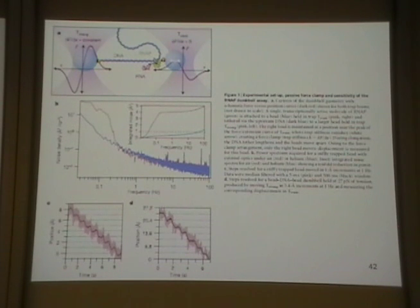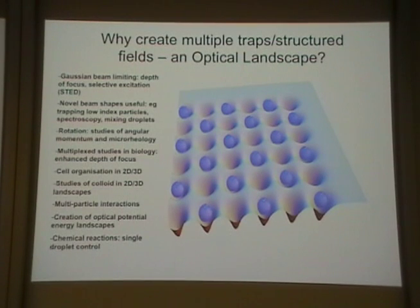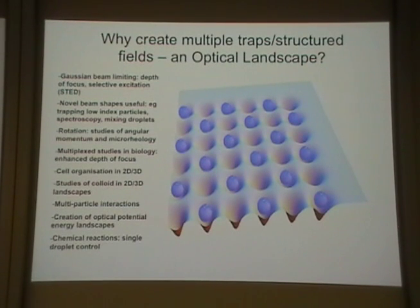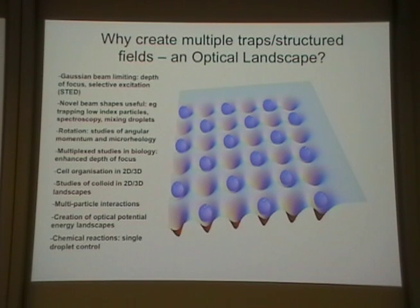So let me go into multiple traps and structured fields for about 15 to 20 minutes. Why would I go away from one trap? Well, we've already seen that if I want to tie DNA in a knot, do transcription studies, or look at actin-myosin, I need to hold a molecule between two beads. What about more traps? If I'm interested in colloidal physics, this is actually very exciting and important.